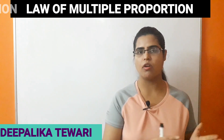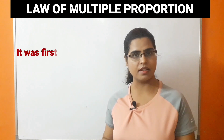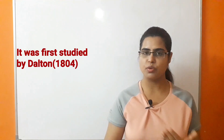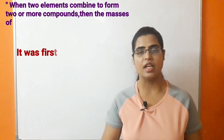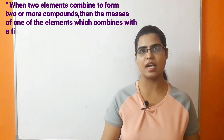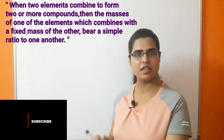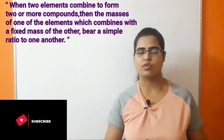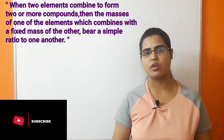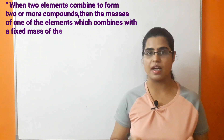The next law of chemical combination is the Law of Multiple Proportions, studied by the scientist Dalton. According to this law, when two elements combine together to form more than one compound, the masses of one element combining with a fixed mass of another element bear a simple ratio to each other. There are many examples by which this law can be explained.